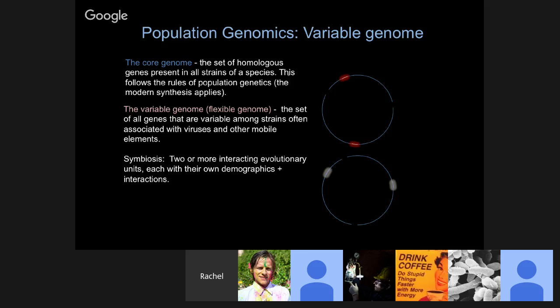When you start to think about population biology in microbial systems, you have to include both the core and the variable genome and think about the rules of symbiosis. We take characterized variation and apply the rules of symbiosis in population biology to try to infer and understand those patterns.